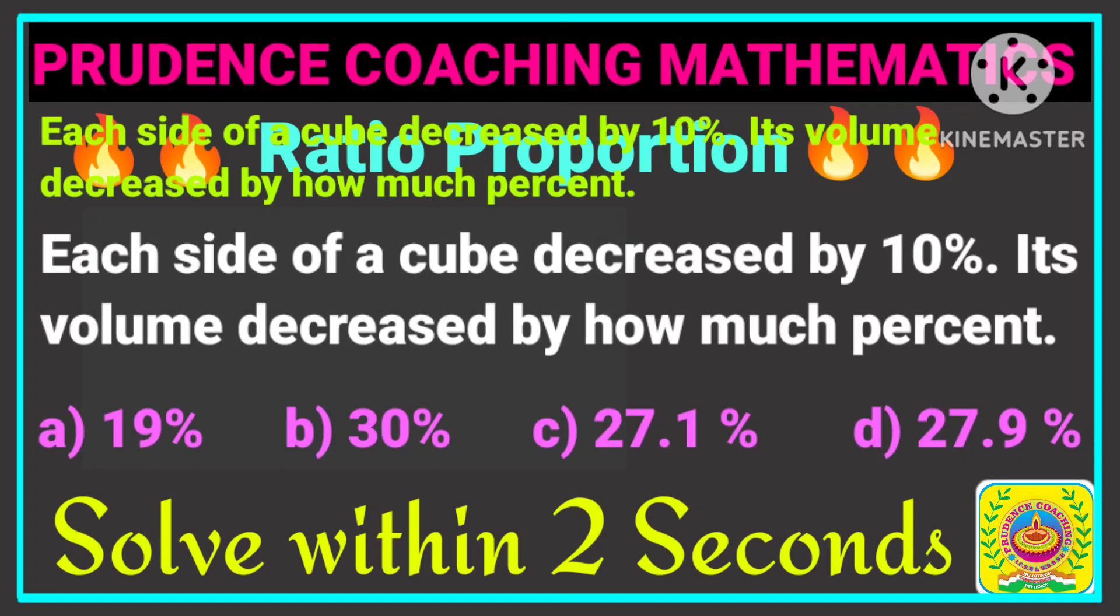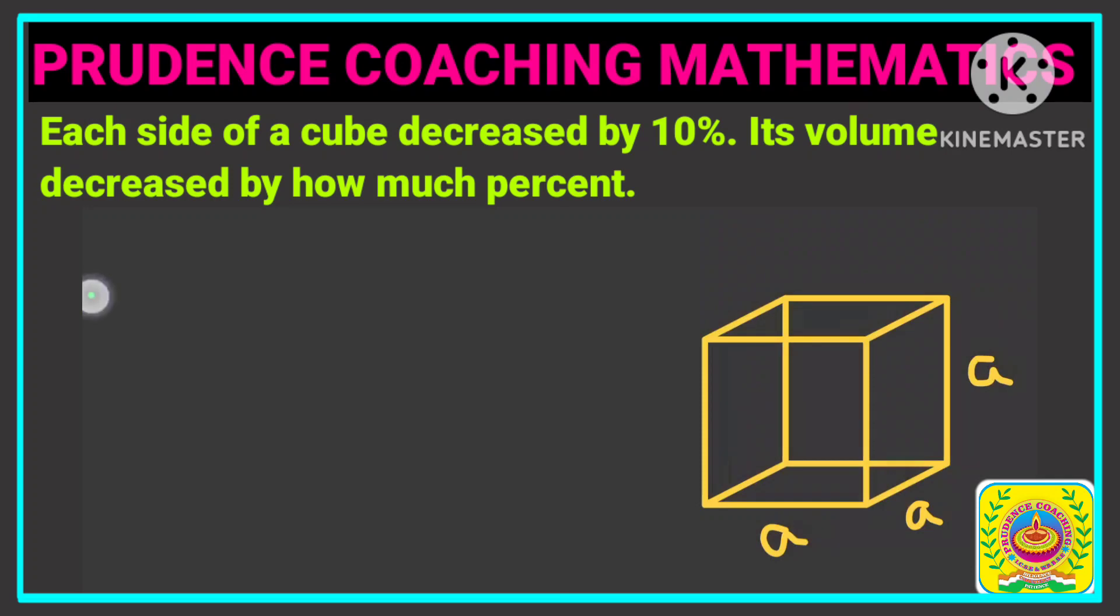Each side of a cube is decreased by 10%. 10% means what? We know the fraction value of 10% - that is 10 by 100, you will get 1 by 10. So here each side is decreased by 10%. So let us assume this side as A. So if side is A, then the volume will be A cube. We all know that.